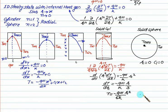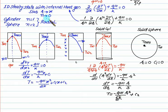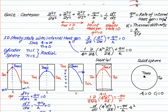Applying boundary condition r = R, T = TW, we can solve for C₂ and find the maximum temperature using the same procedure discussed for the cylinder. Using only one unified equation with n = 0, 1, 2, we have solved all three geometries.